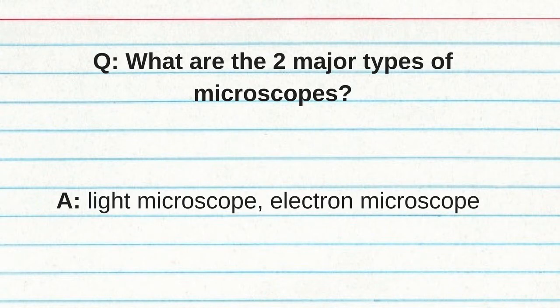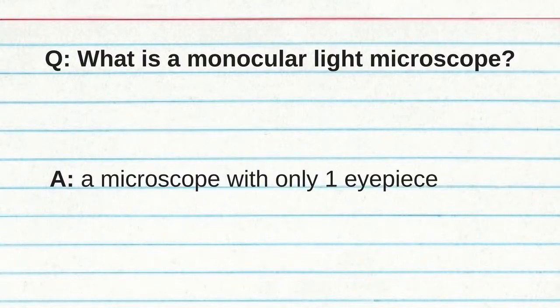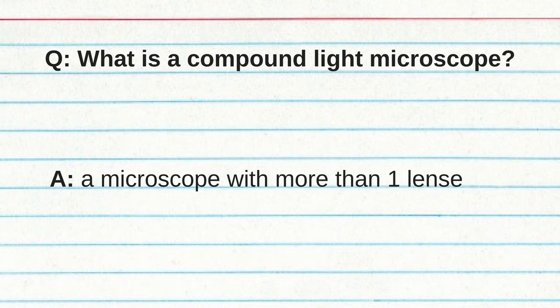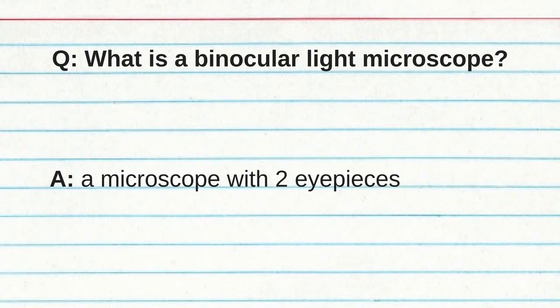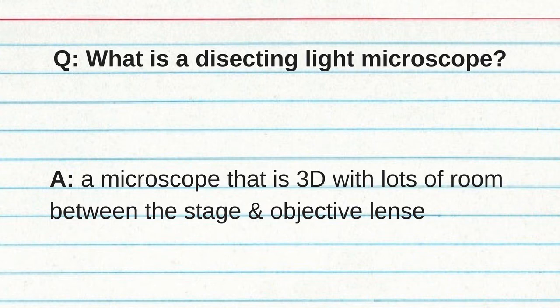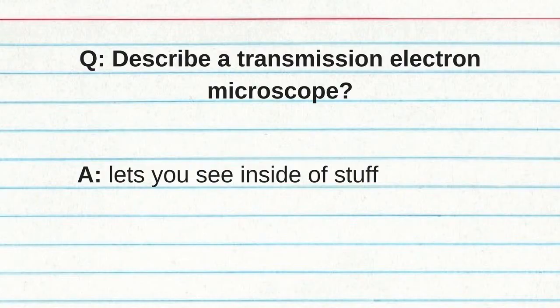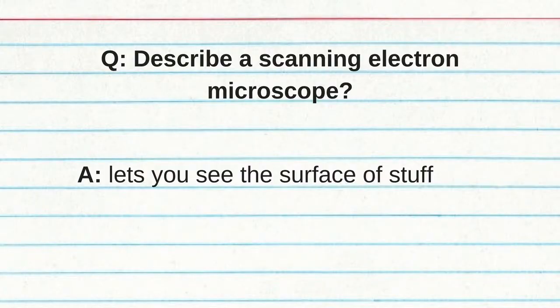What are two major types of microscopes? Light microscope and electron microscopes. A monocular light microscope has only one eyepiece. A compound light microscope has more than one lens. A binocular light microscope has two eyepieces. A dissecting light microscope is 3D with lots of room between the stage and projection lens. A transmission electron microscope lets you see the inside of stuff. A scanning electron microscope lets you see the surface of stuff.